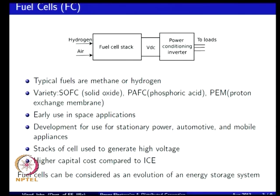If you look at these systems in general, both the sources such as what we discussed in the last class, and also storage elements are important especially in distributed generation, where both the load and the source can potentially be intermittent. Many sources do not have very high bandwidth to track the instantaneous power requirement by loads, so the storage part is also an important aspect of distributed generation.